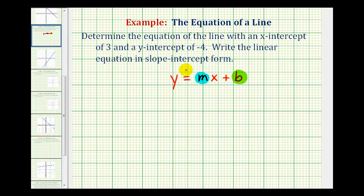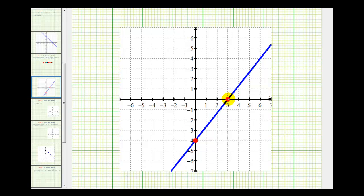Let's first take a look at it graphically. Here's the x intercept of positive three and the y intercept of negative four. So the x intercept has the coordinates three, zero, and the y intercept has the coordinates zero, negative four.